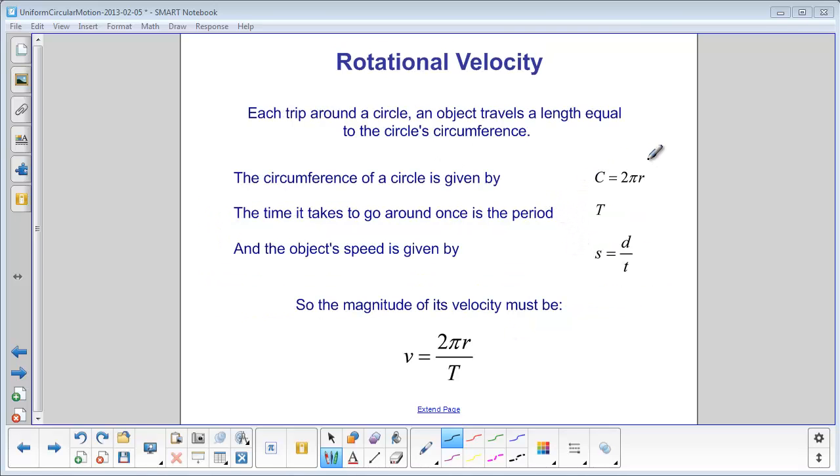The circumference of a circle is given by 2πr, where r is the radius of the circle. The period is given by a capital T, so since speed is distance divided by time, the distance is 2πr divided by the time,